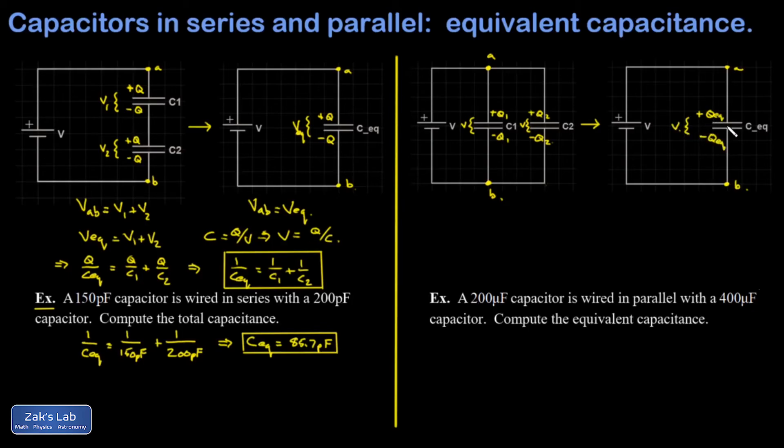And again, the potential difference across CEQ is exactly the same as for C1 and C2 because it directly sees the high and low sides of the battery. So this time I get a handle on the relationship between C1, C2, and C equivalent by saying that the total charge on the equivalent capacitor better be equal to the charge on the two individuals put together.